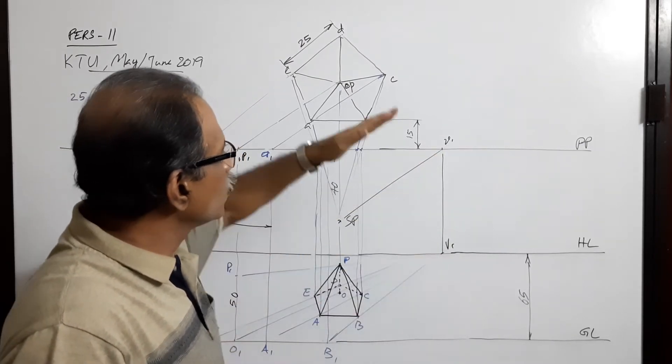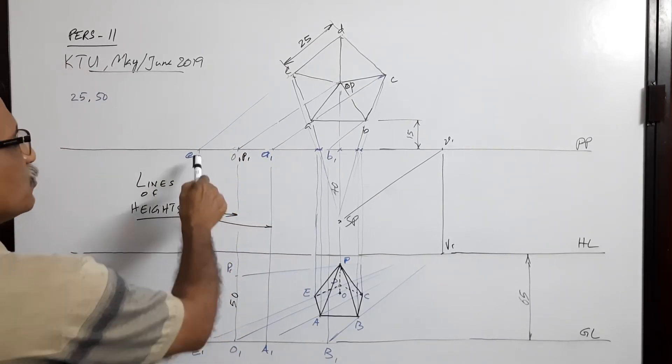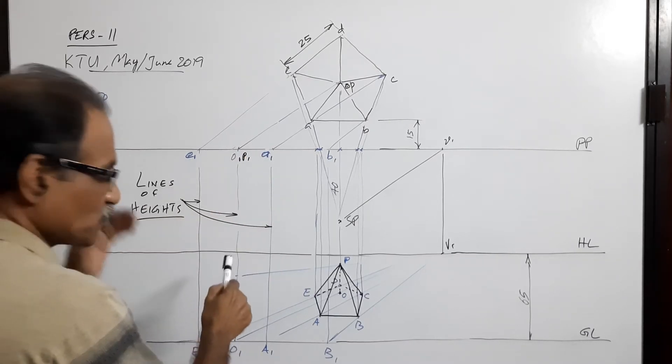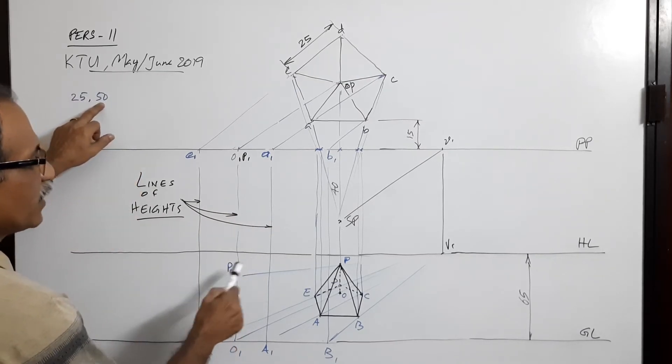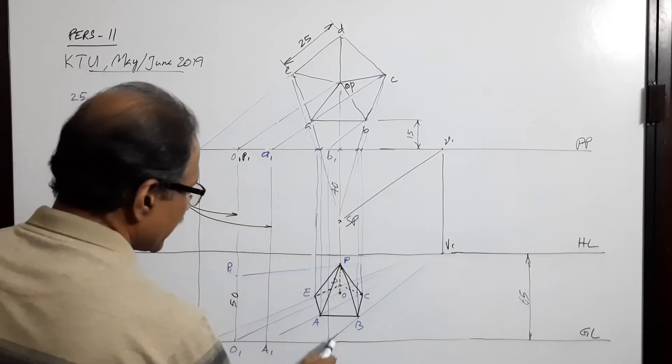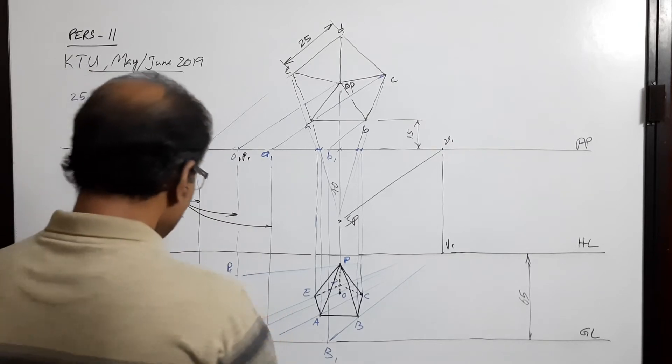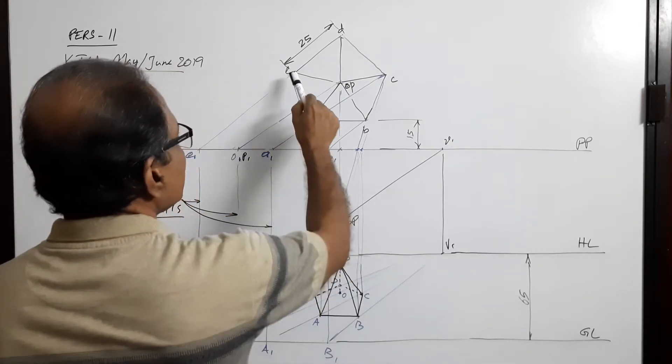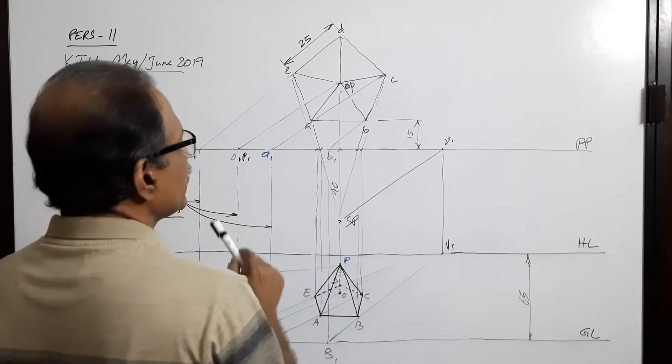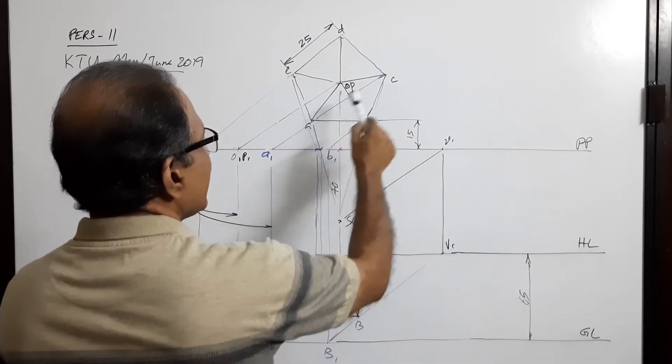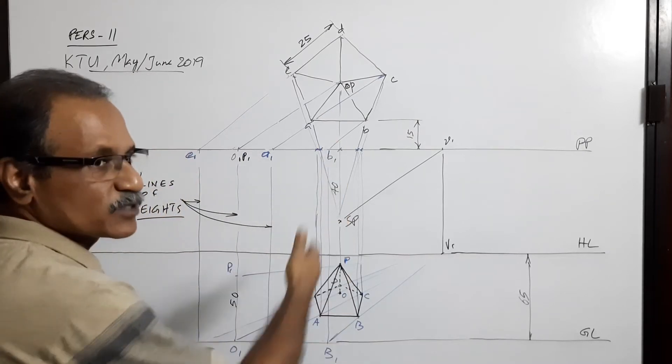Then I drop E1 to GL to get capital E1, which is the perspective of this point. I drop O1 P1 down. I get O1, 50mm above, 50 is the height. 50mm above I get P1. Drop this down I get A1, drop this down I get B1. Then I join E1, O1, A1, and B1 to the vanishing point. This E1 V1 will contain E and D, this O1 V1 will contain O, this P1 V1 will contain P, this A1 V1 will contain A and C, this B1 V1 will contain B. Where are they?